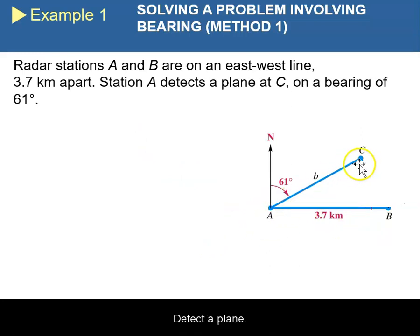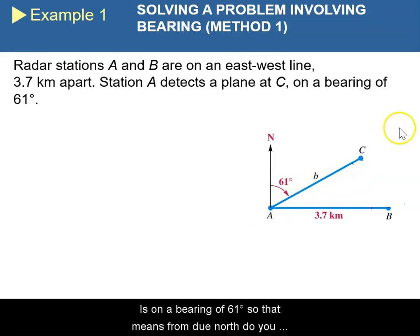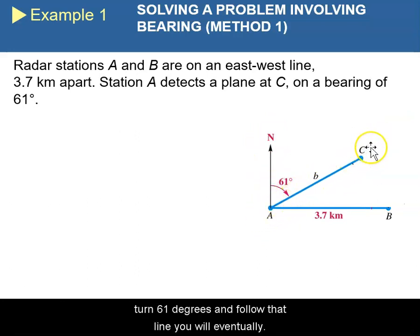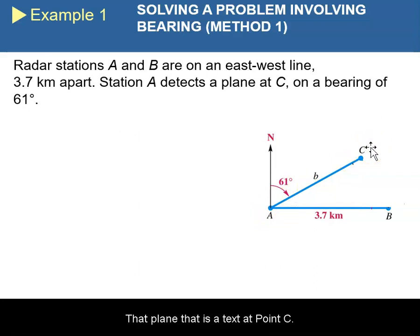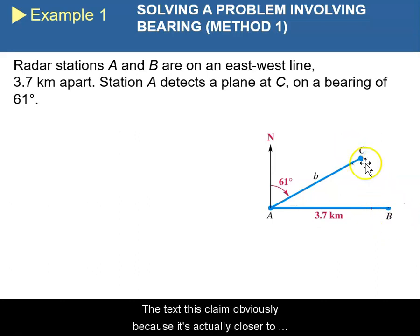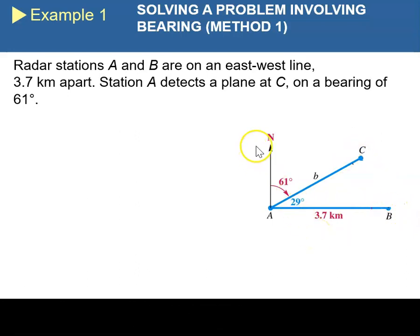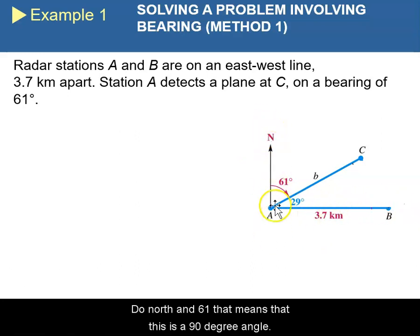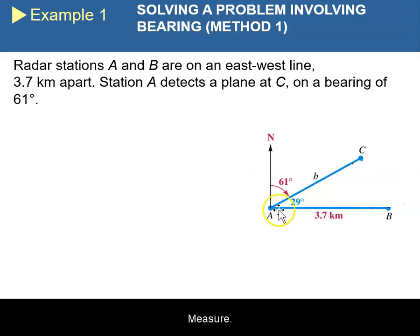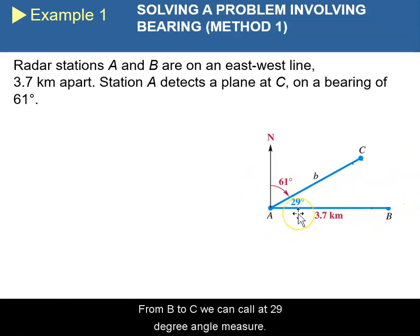Station A detects a plane, and the position of that plane is on a bearing of 61 degrees. So that means from due north, if you turn 61 degrees and follow that line, you will eventually hit that plane at point C. Station B also detects this plane. If this is on an east-west line due north at 61 degrees, that means this is a 90-degree angle, and the angle measured from B to C we can call a 29-degree angle measure.